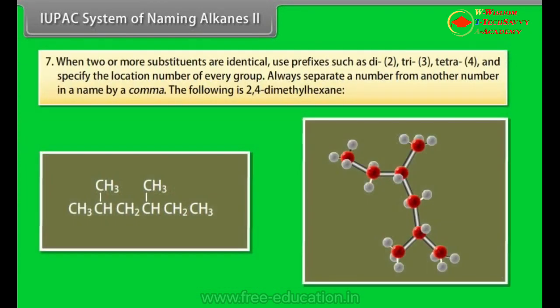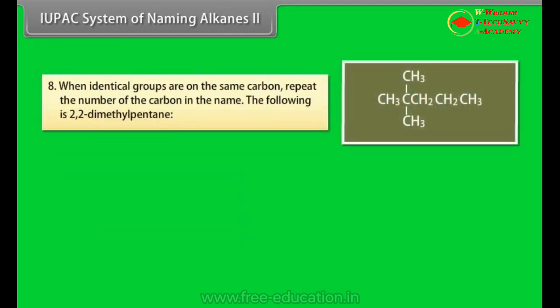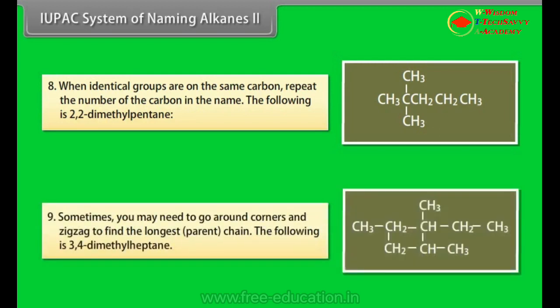Number 7: When two or more substituents are identical, use prefixes such as di- for 2, tri- for 3, tetra- for 4 and specify the location of every group. Always separate a number from another number in a name by a comma. The following is 2,4-dimethylhexane. Number 8: When identical groups are on the same carbon, repeat the number of the carbon in the name. The following is 2,2-dimethylhexane. Number 9: Sometimes you may need to go around corners and zigzag to find the longest parent chain. The following is 3,4-dimethylhexane.